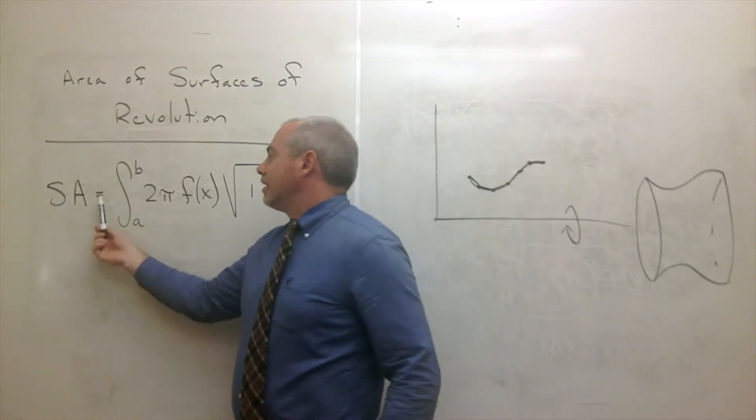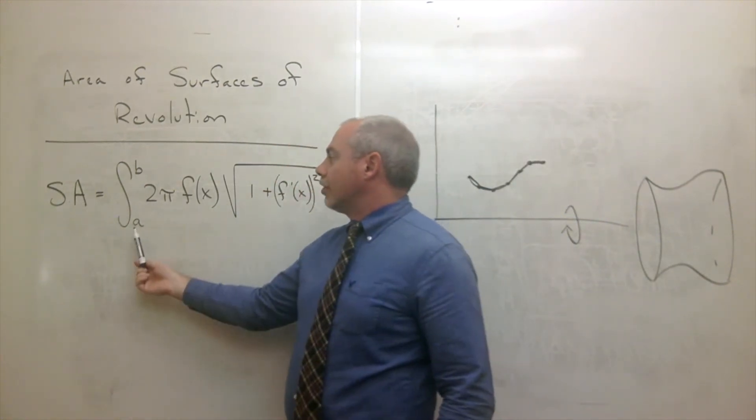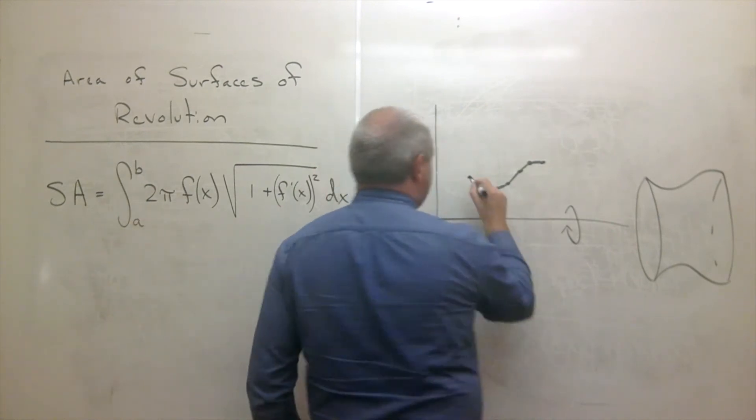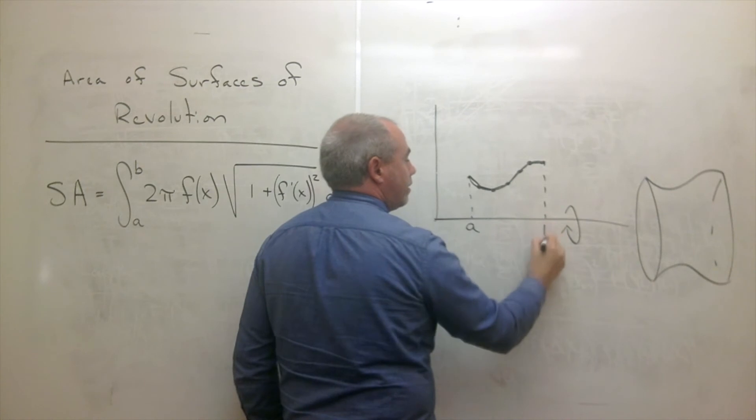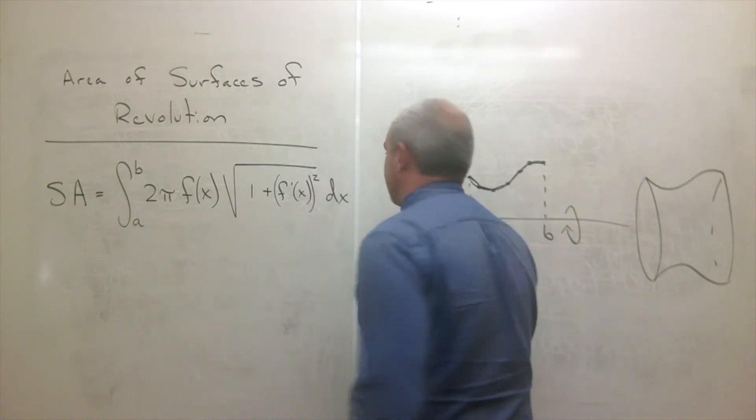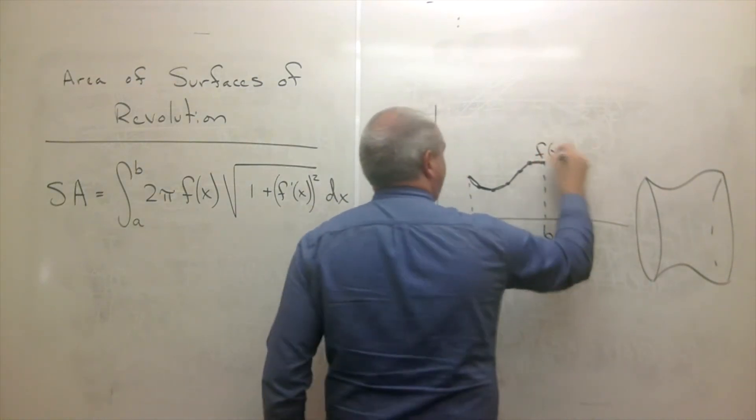So surface area is equal to the integral from a to b, where a is this starting x value, and b is this ending x value. This is my function f of x.